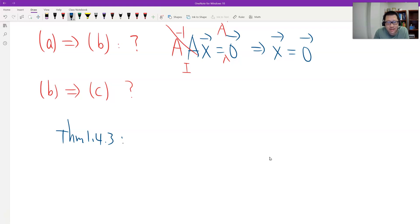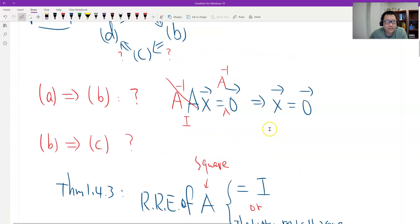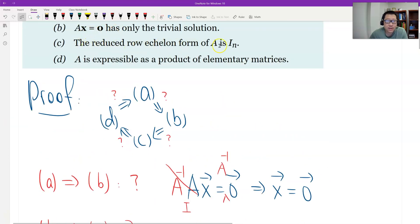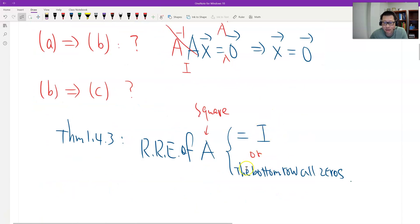That's theorem 1.4.3. It says for square matrix A, the reduced row echelon of square matrix A has only two cases. The first, either equals identity, or the second, there's one row on the bottom all zeros. So this is the theorem we are going to use. What do we need to prove? We need to prove C, the reduced row echelon is I, is an identity, not the second case.